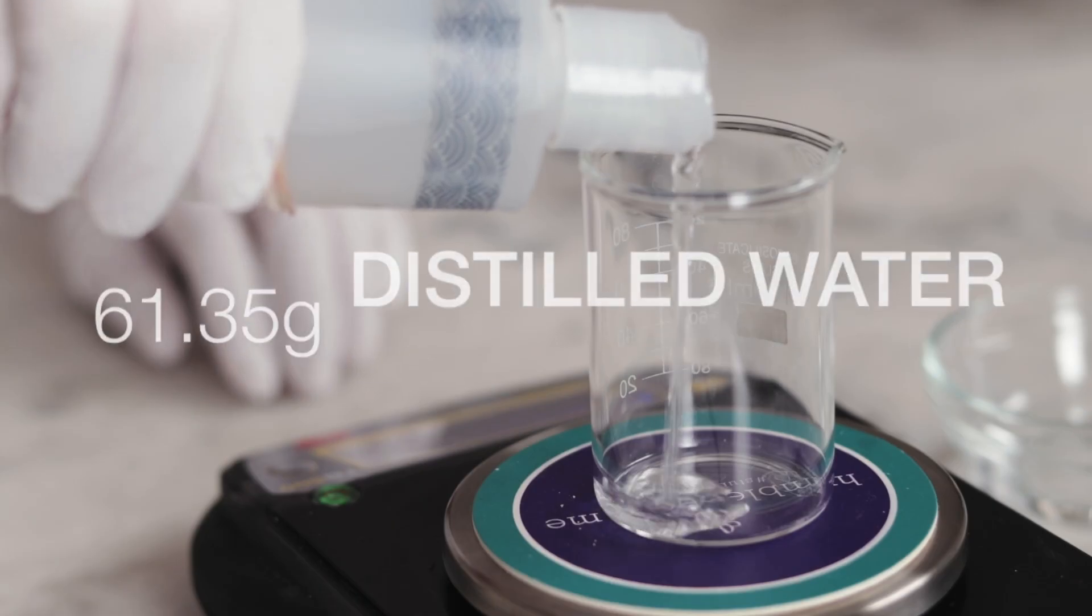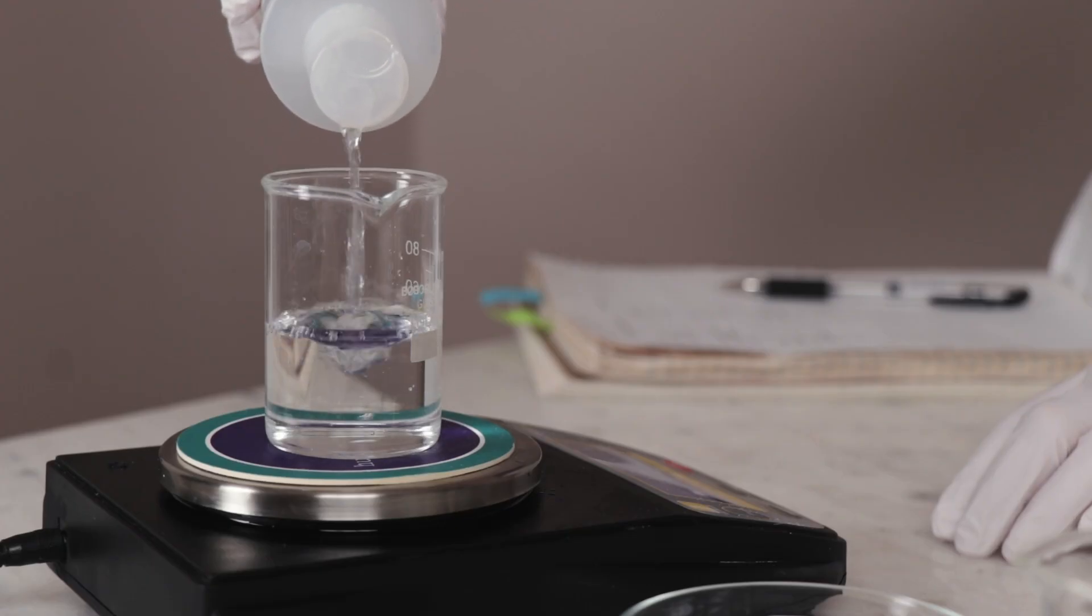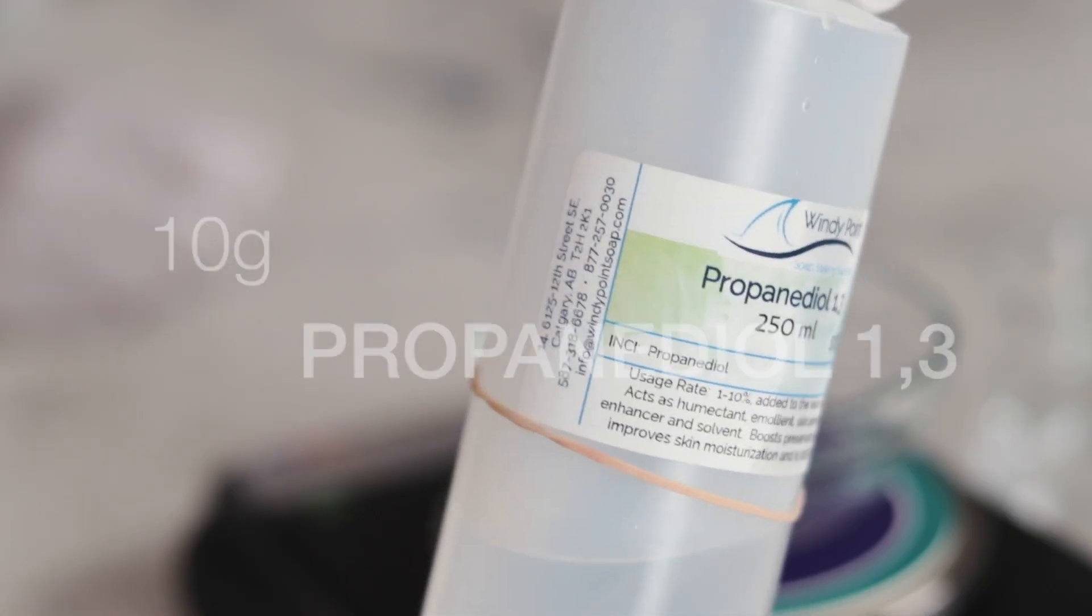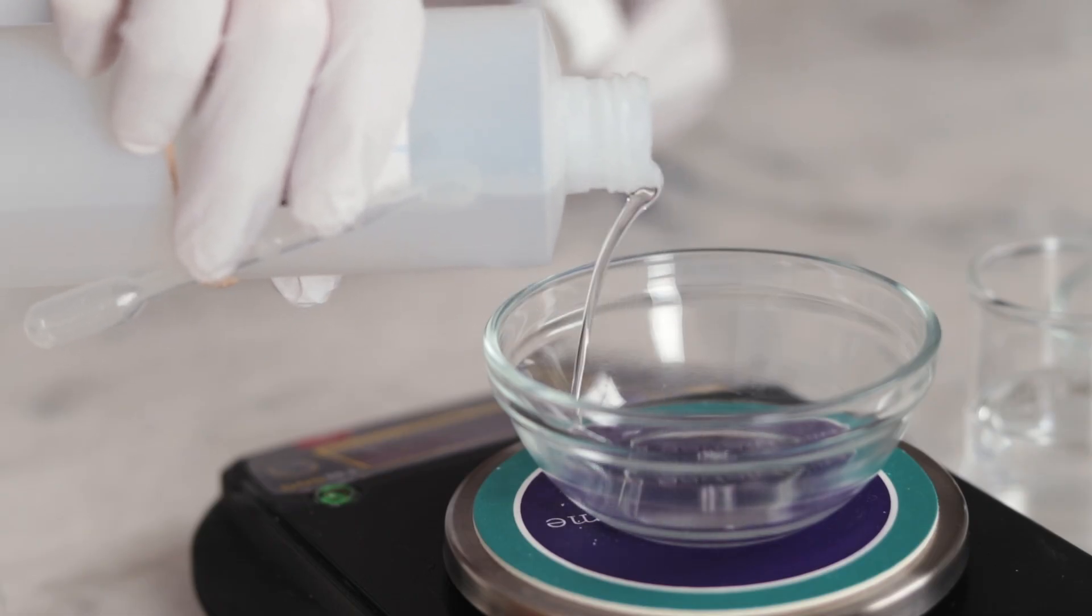You'll need 61.35 grams distilled water. This dilutes all of the actives in the formulation to safe levels and delivers some essential hydration. To boost hydration and preservative performance, we'll need 10 grams of propanediol-1-3, or propylene glycol.